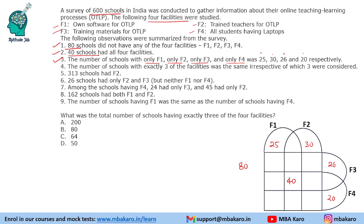The number of schools with exactly 3 of the facilities was the same irrespective of which 3 were considered. So we will have different combinations of schools that have exactly 3 facilities, and all those numbers are the same. Let us call that common value A for now, so we remember they are all equal.